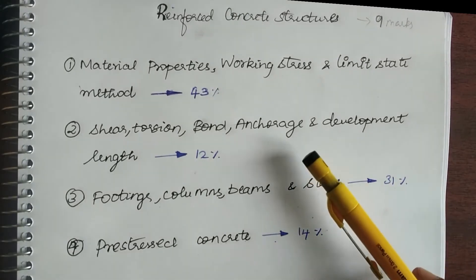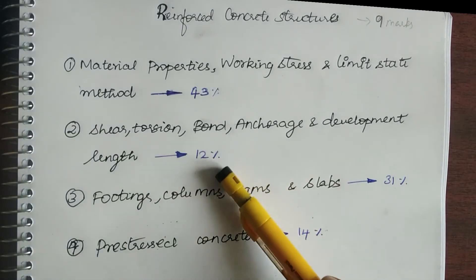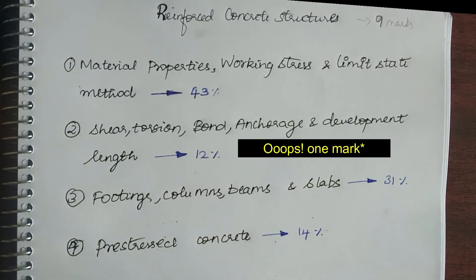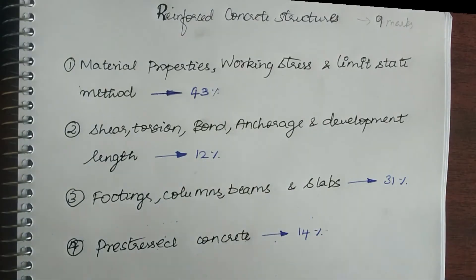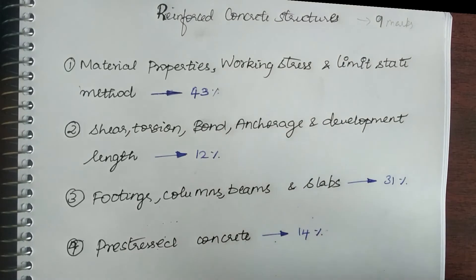Coming to the second topic: shear, torsion, bond, anchorage, and development length. This comprises of 12 percentage, which will give you one mark. If you have time and if you are not into the last minute preparation, you can definitely learn this thing. It is very easy. Mostly they ask the code provisions only.